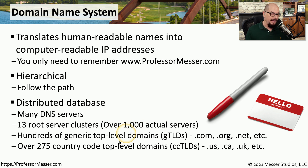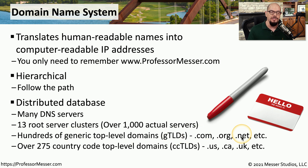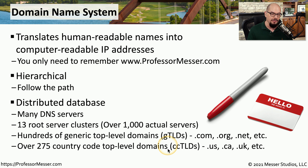This allows us to have top-level domains, or TLDs, that may be generic, such as the .com, .org, and .net addresses we may be familiar with. But there are also country codes that can be used as top-level domains. Things like .us and .ca and .uk are associated with individual countries.